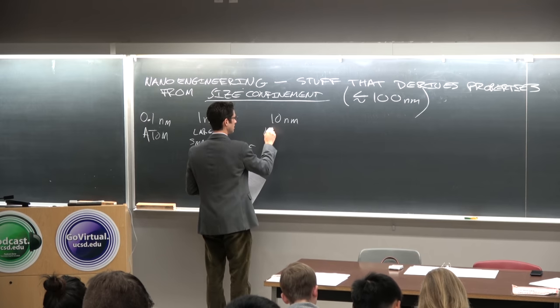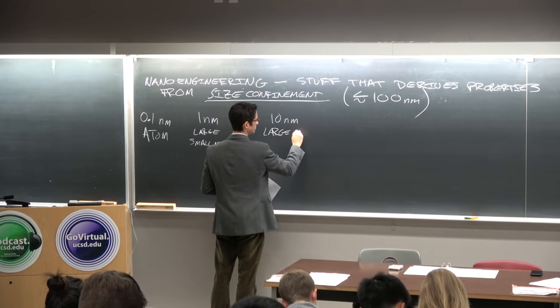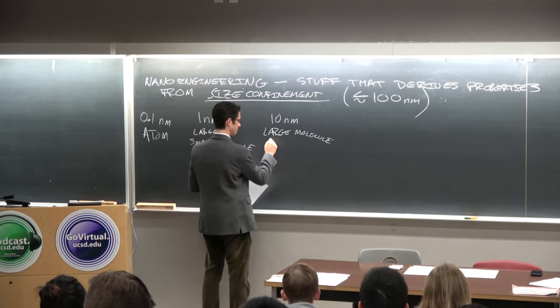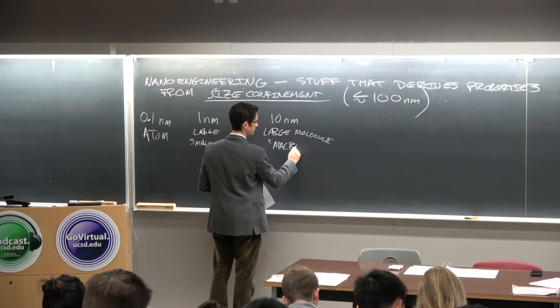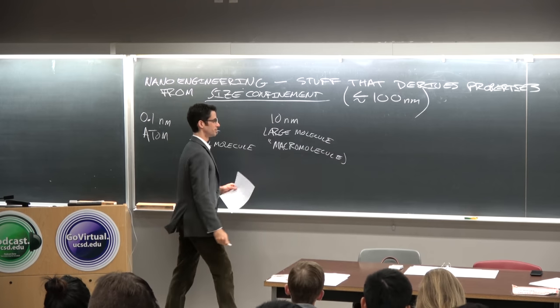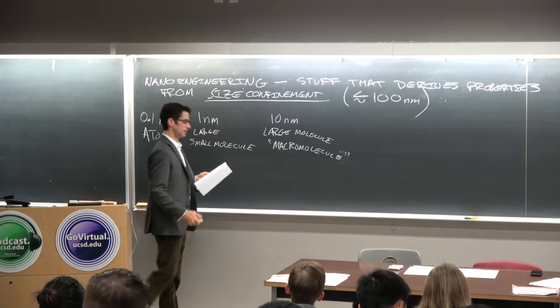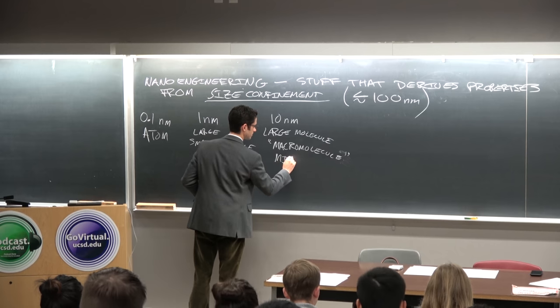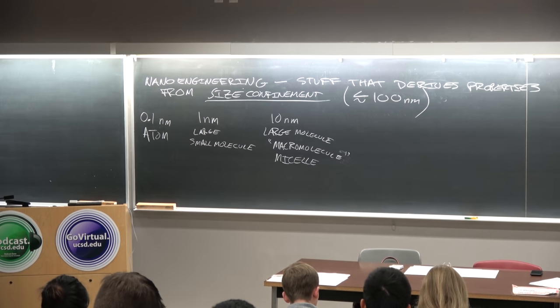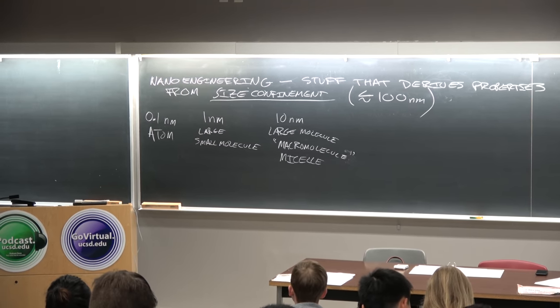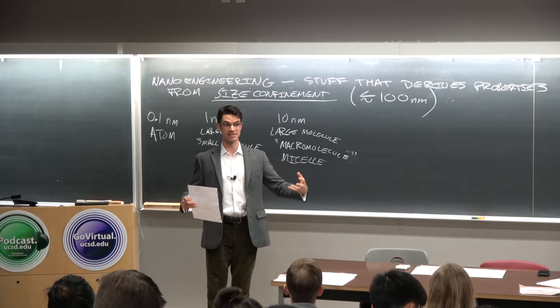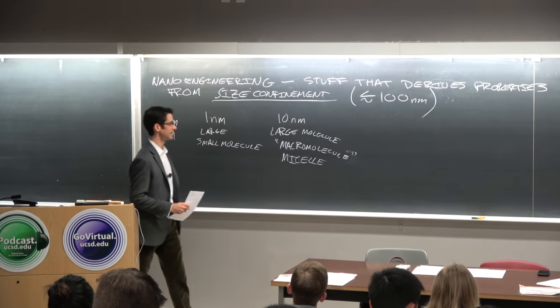10 nanometers is a large molecule, a large, large molecule, or a macromolecule. A macromolecule could be a protein or a polymer blob, like a blob of polystyrene or acrylic polymer in a solution. That would have a characteristic size of 10 nanometers.